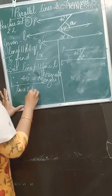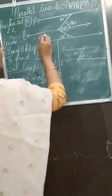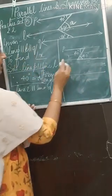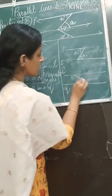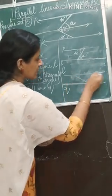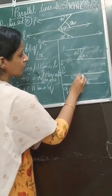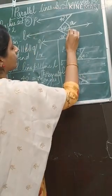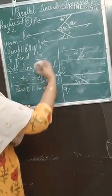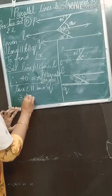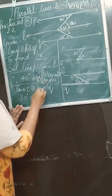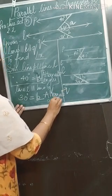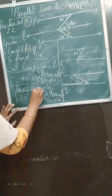Now we consider the other two lines: line L parallel to line Q. Again here there is a Z-shape. This is line L and line Q, with the transversal this way — so again you have a Z. This part is 30 degrees, so that alternate angle part will also be 30 degrees. We will name that part as B. So 30 degrees equals B. Reason: alternate angles. Therefore B is 30 degrees.